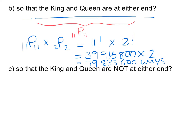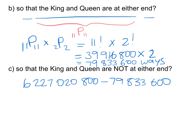For part c, we want the number of ways where the king and queen are NOT at either end. We already know how many arrangements have them at the ends, so we subtract that from the total: 6,227,020,800 − 79,833,600 = 6,147,187,200 ways.